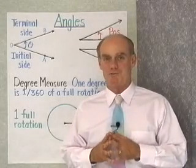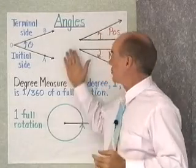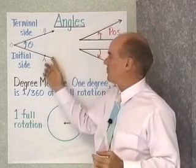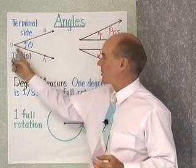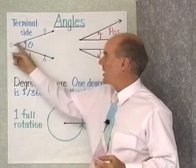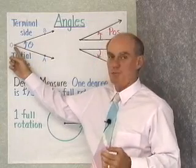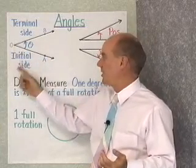Hello, and welcome to the video lessons for Trigonometry. My first definition has to do with angles. I've drawn a general angle here — it's two rays, ray OA and ray OB, with a common endpoint, and that's called the vertex of the angle.